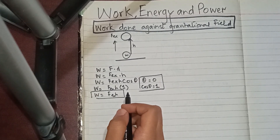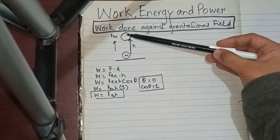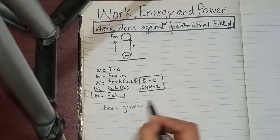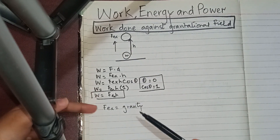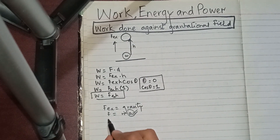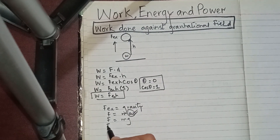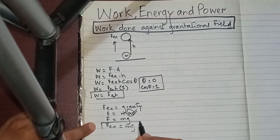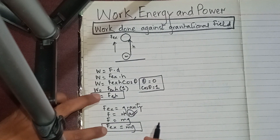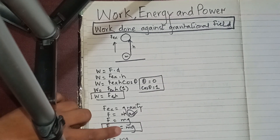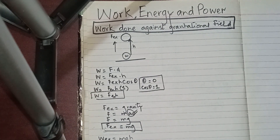Now, the statement says the acceleration was zero. This means the external force was equal to gravity, making the net acceleration zero. Using Newton's second law, F = ma, and since the acceleration here is due to gravity, F = mg. Substituting into the work formula: work done by the external force = mg × h = mgh. We label this as Equation 1.